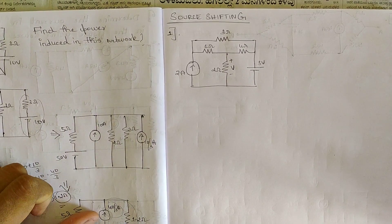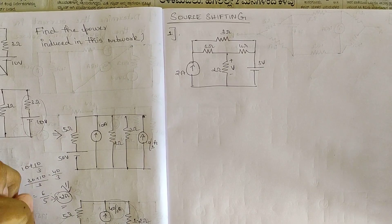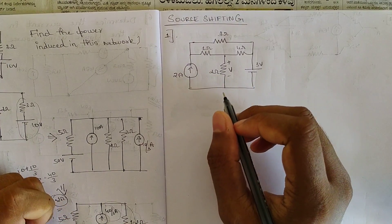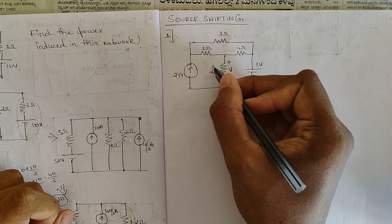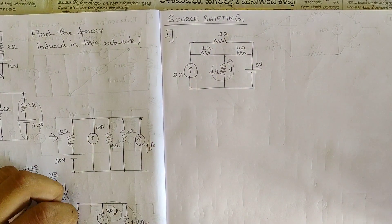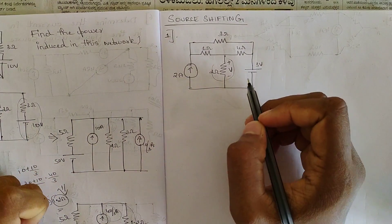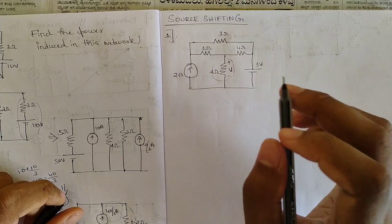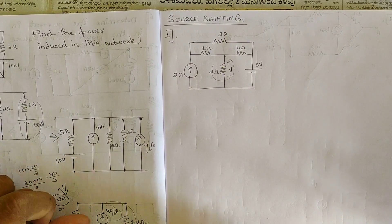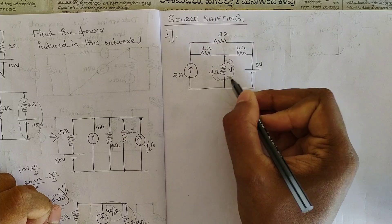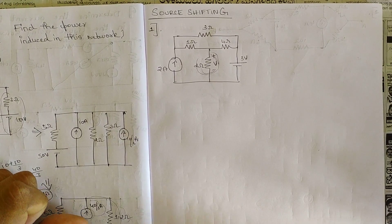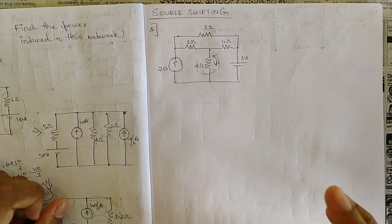So this is the problem. In this case they have told us to determine the voltage V across the two ohm resistor using source shifting as well as source transformation. In the first part of the circuit we should be trying to shift the sources, and after that do the source transformation and reduce the network to find the voltage across this two ohm resistance. First, check which source shifting is possible — either current source or voltage source.